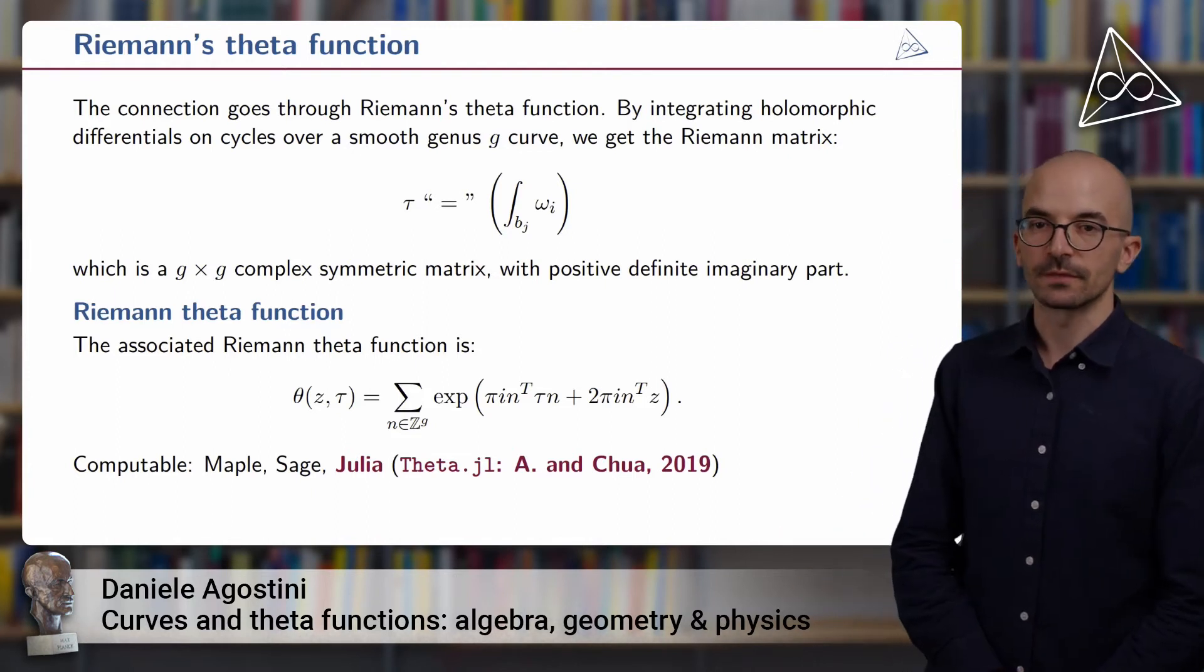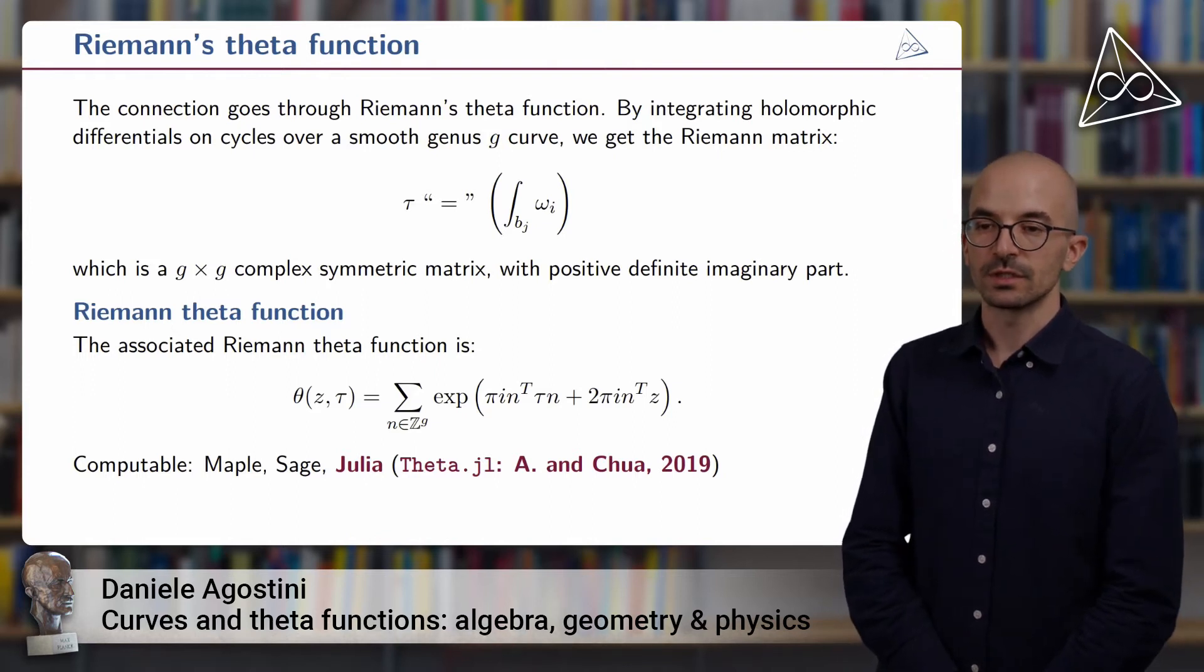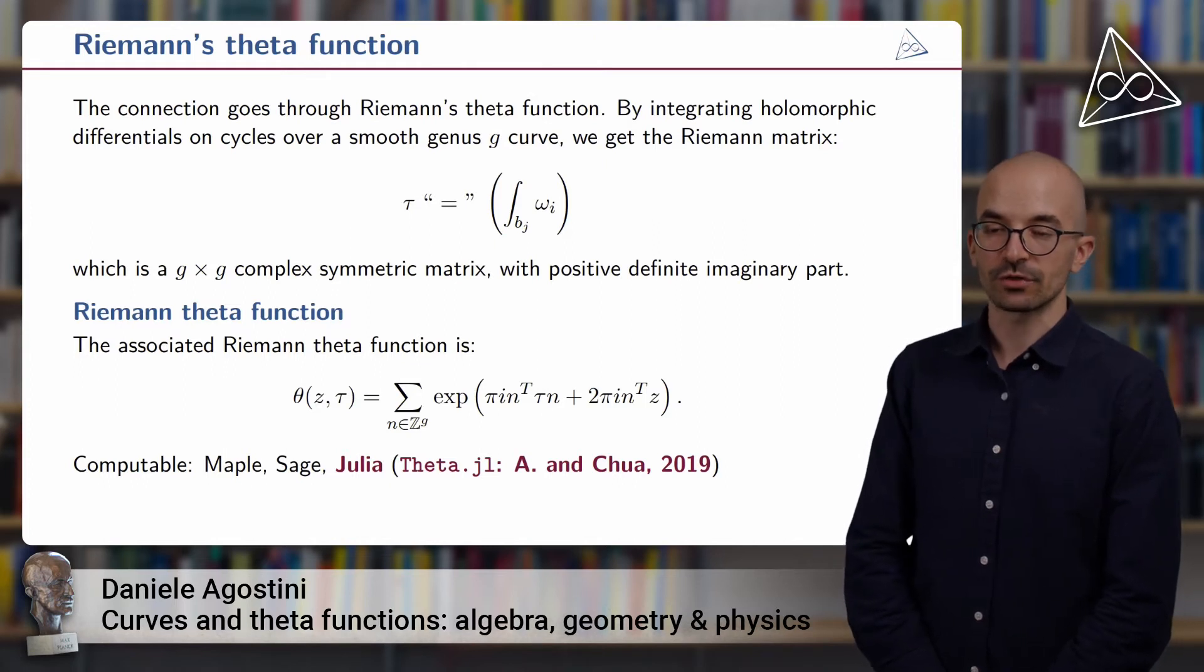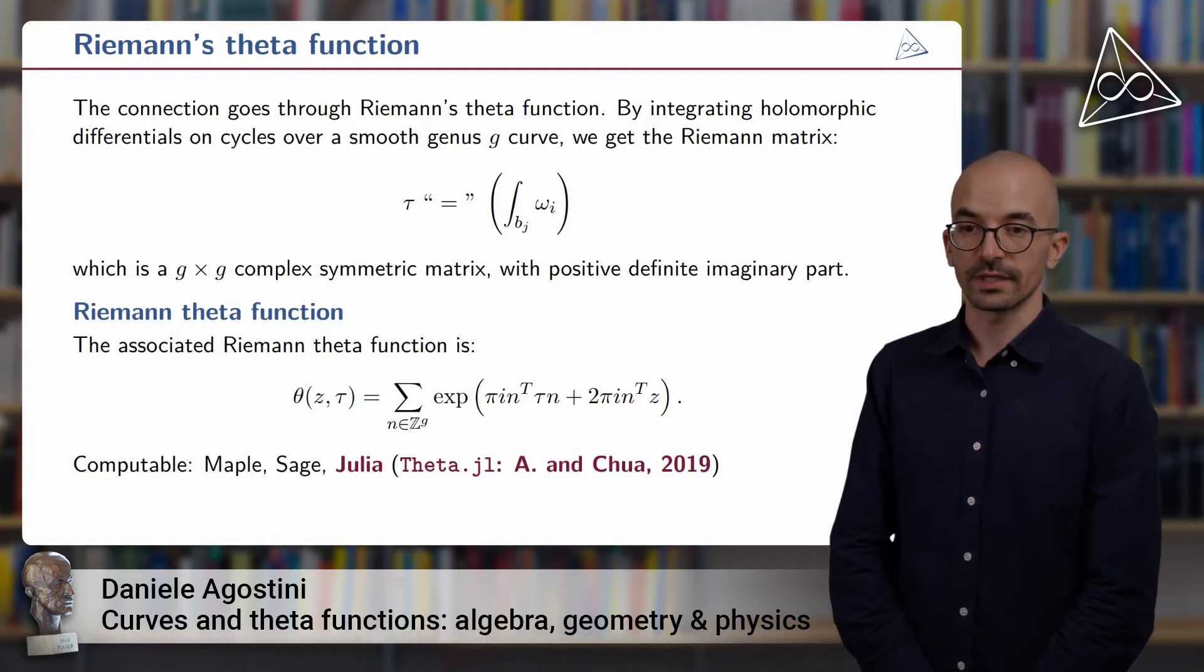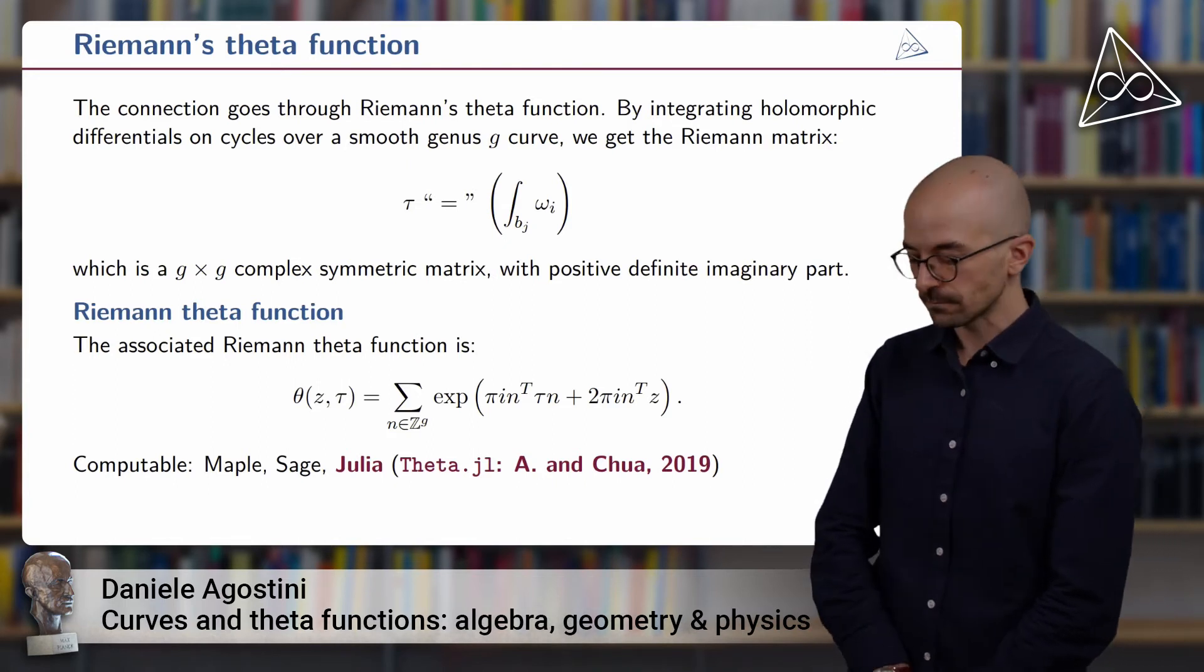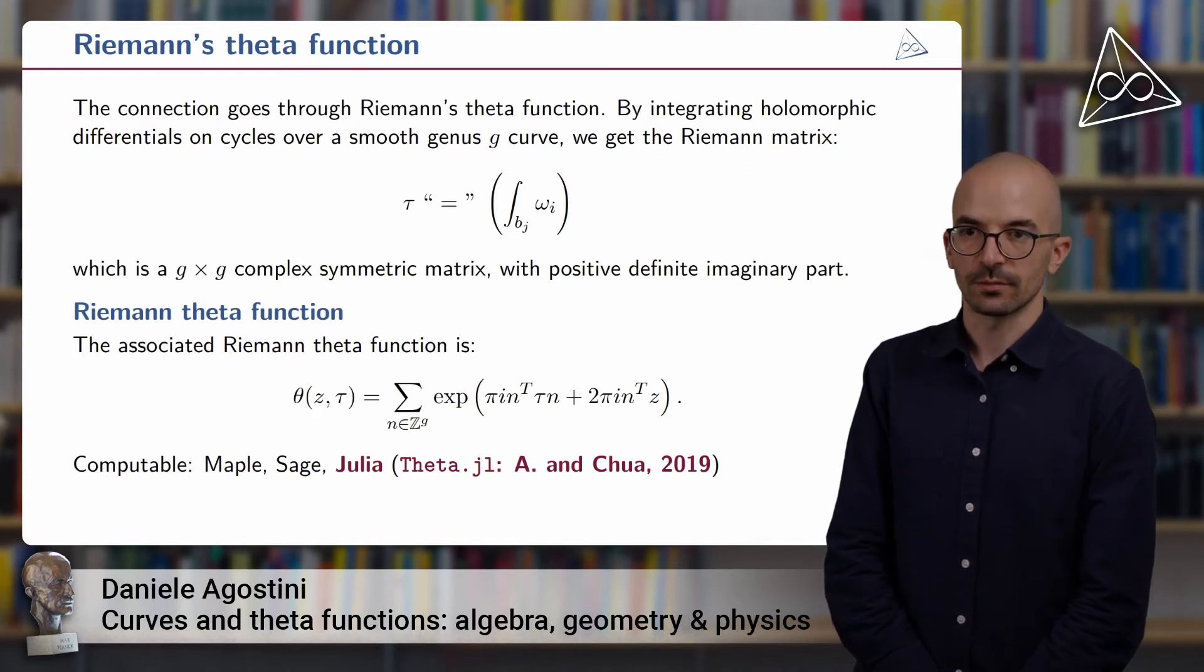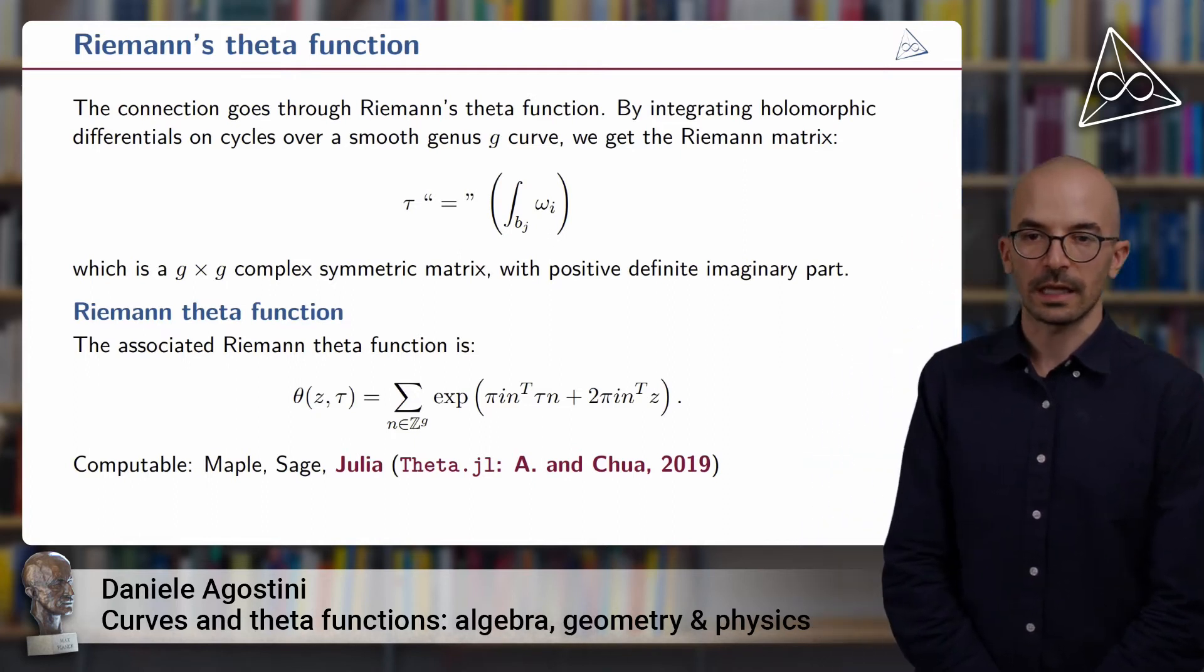Out of this Riemann matrix, now we can define the Riemann theta function. That was introduced by Riemann himself. You can see it here. It's an infinite sum of exponentials. The sum is over the multidimensional lattice Z^g. And each summand is the exponential of a quadratic form in tau and a linear form depending on the complex vector z. This is a fundamental function throughout mathematics. It appears in many different contexts in algebra and geometry, in mathematical physics, such as in the KP equation, but also in places such as probability, statistics, and cryptography.